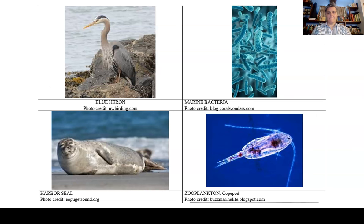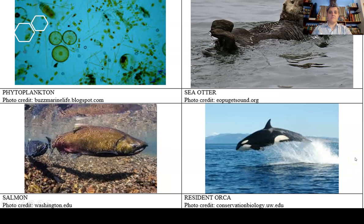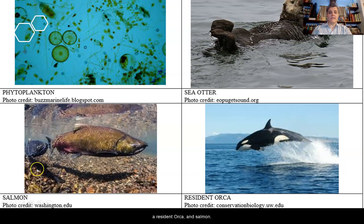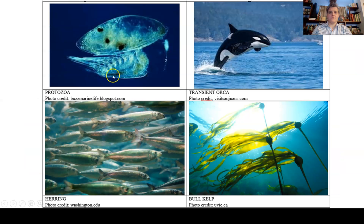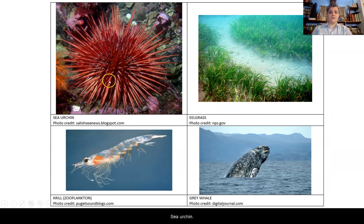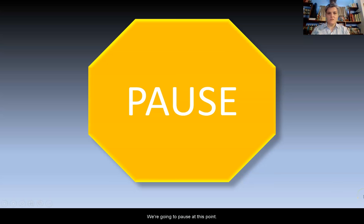So let's meet the organisms. We have a blue heron, marine bacteria, zooplankton — this is a copepod — and a harbor seal. We have phytoplankton, the sea otter, a resident orca, and salmon. Also protozoa, transient orca, bull kelp, herring, sea urchin, eel grass, a gray whale, and krill, which is also a type of zooplankton. So we're going to pause at this point. This is where you are going to take the time to use that pencil and paper and the organisms you were just introduced to, and create that marine food web.